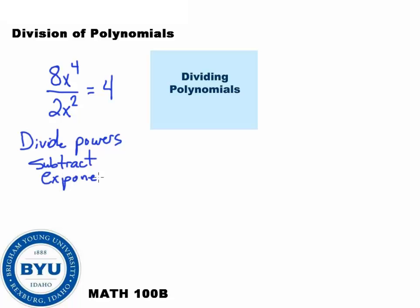So on this question here, we would basically get 4x to the 4 minus 2, which is 2. This is really all the section is about, and we kind of already covered it.